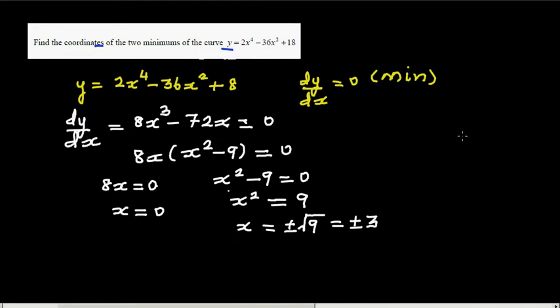So you've got three turning points. We don't know what's the maximum minimum, so let's find the coordinates. When x is zero, y is going to be 18.